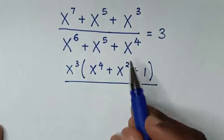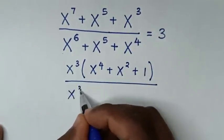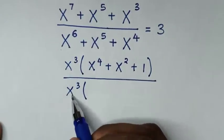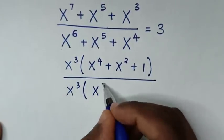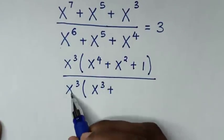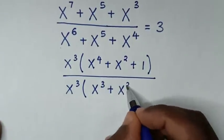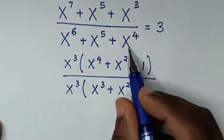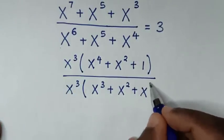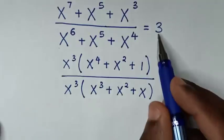In the denominator we will also take x³ out of the bracket. Then x⁶ divided by x³ is x³, plus x⁵ divided by x³ is x², plus x⁴ divided by x³ is x, close bracket. This is equal to 3.